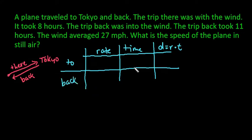As far as the time goes for this one, it's very easy because it just tells us that the trip took 8 hours going to Tokyo and it took 11 hours coming back from Tokyo. The wind averaged 27 miles per hour, so this is telling us that the wind, which is going to impact our rate, averaged 27 miles per hour.